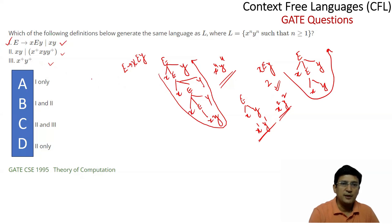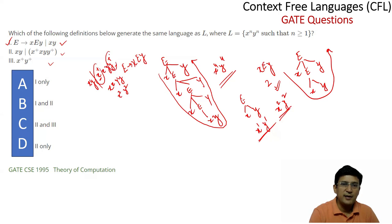What about option 2? Option 2 says it is x+ y+, meaning at least one x followed by at least one y. But it is not guaranteed that x+ and y+ generate the same number. For example, x+ could generate 2 x's, and y+ could generate 1 y, giving x^2 y — which is not of the form x^n y^n. So option 2 is incorrect.